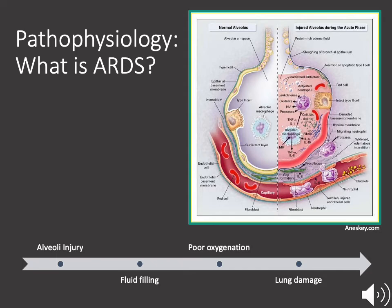Over time, this parenchymal damage can also lead to hyaline membrane formation, disordered healing, and fibrosis.